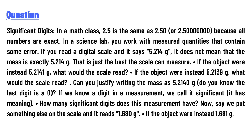If the object were instead 5.2141 g, what would the scale read? If the object were instead 5.2139 g, what would the scale read? Can you justify writing the mass as 5.2140 g — do you know the last digit is a zero?